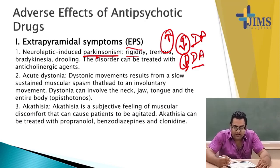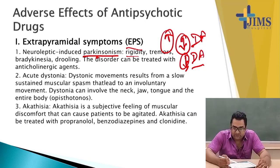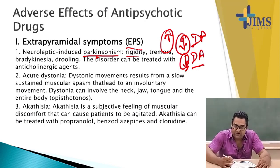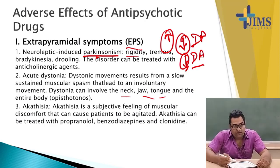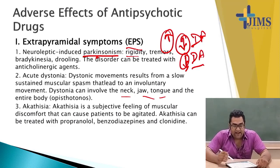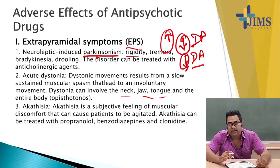In acute dystonia, sustained muscle spasm leads to involuntary movement. Dystonia can affect the neck, jaw, and tongue. Akathisia is a subjective feeling of muscular discomfort that can cause patients to be agitated. Akathisia can be treated with propranolol, benzodiazepines, and clonidine.